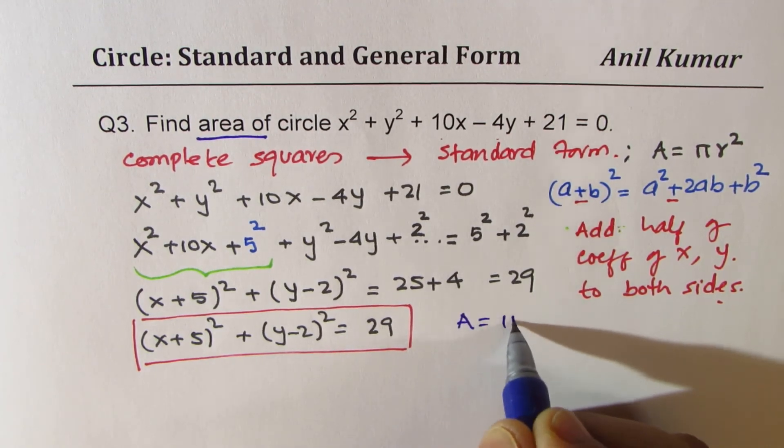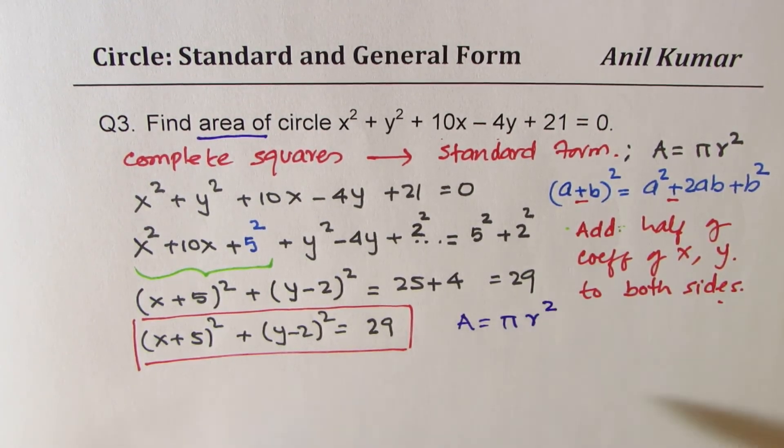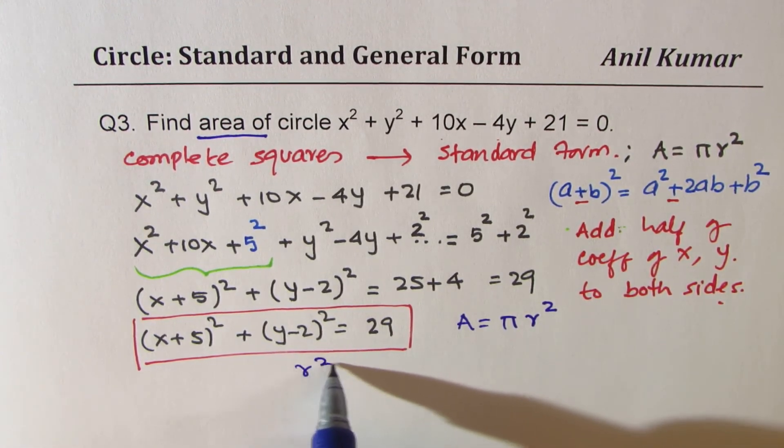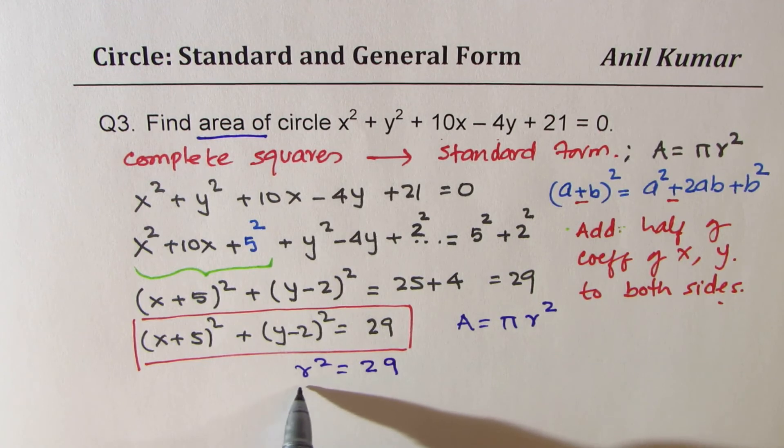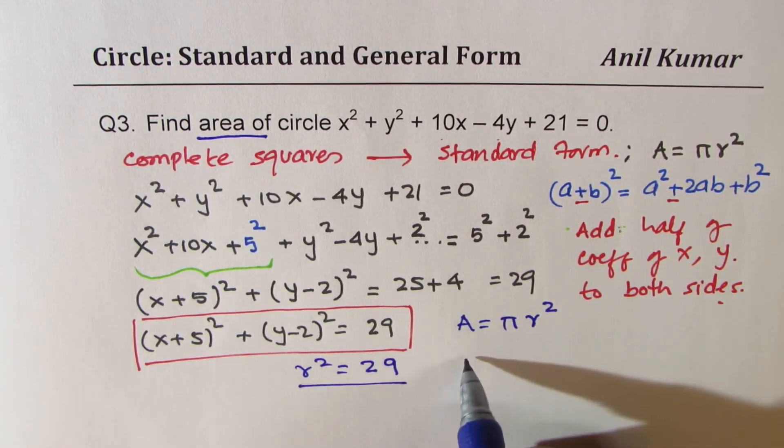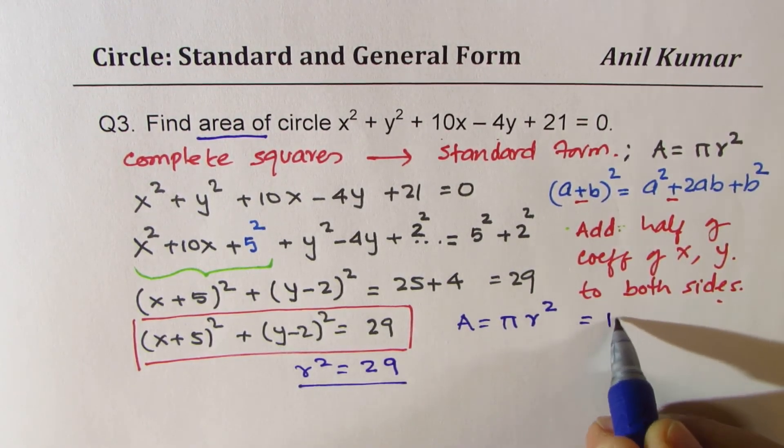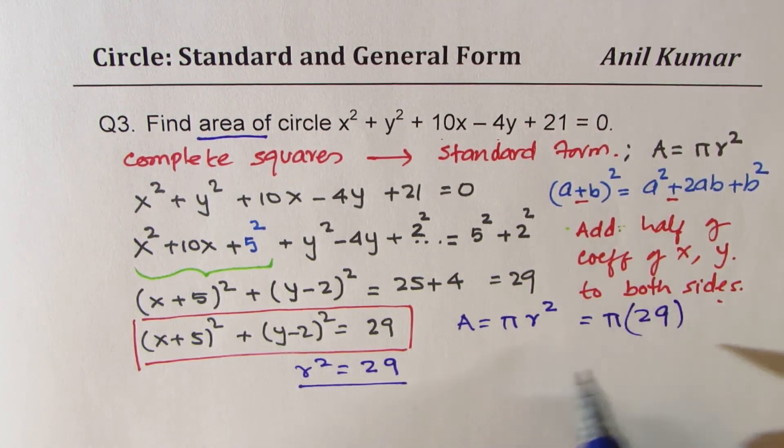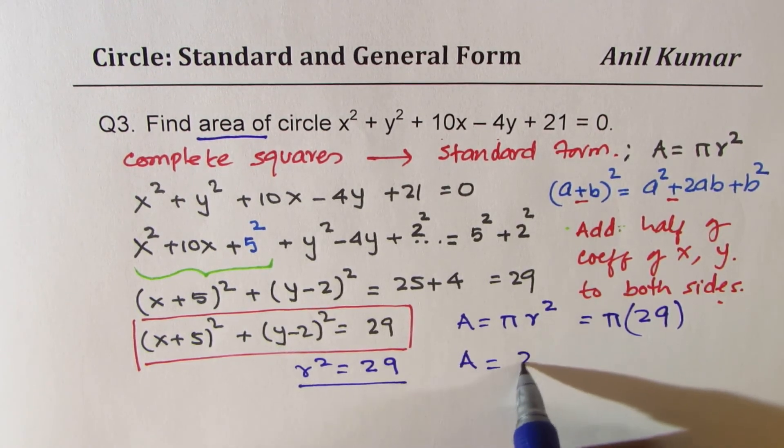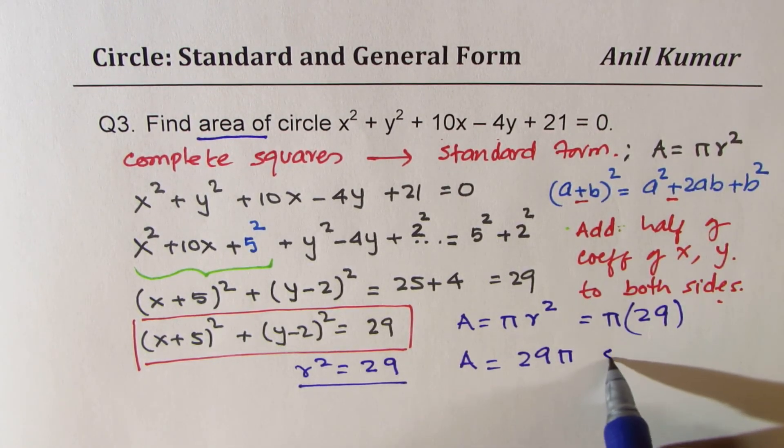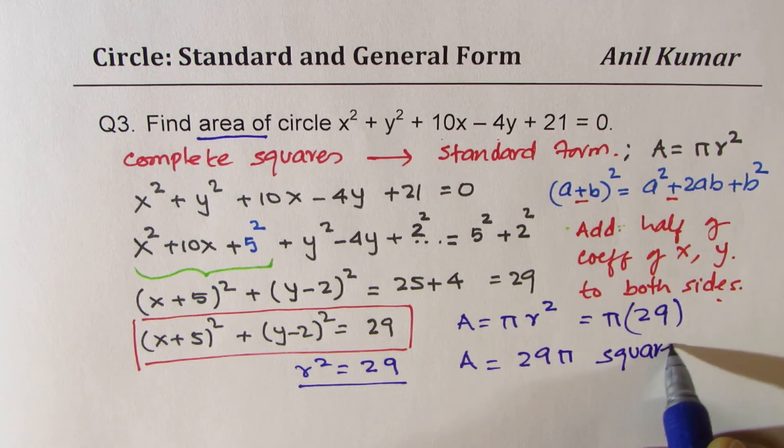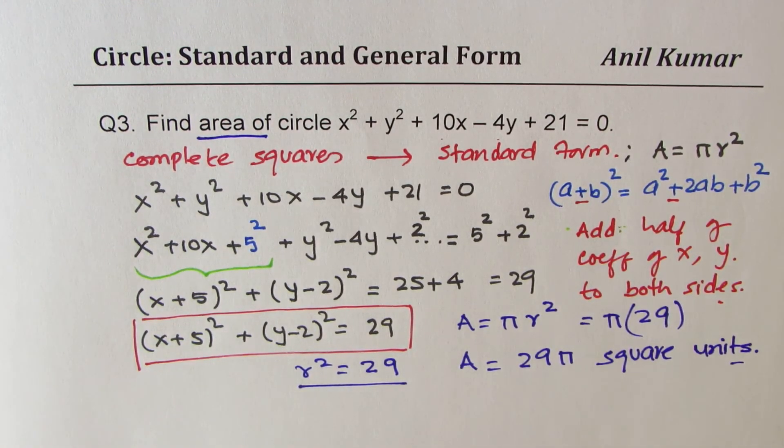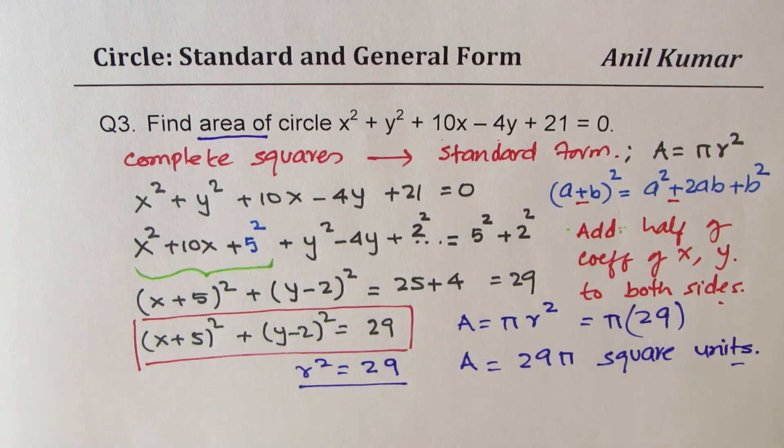Now area is πr². Now from this formula in standard form, we know r² is 29. 29 is r². So what is the area for us? So the area will be π times 29. So the exact area is 29π square units.